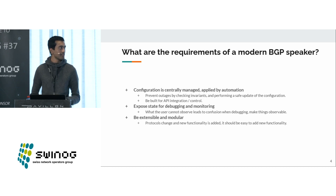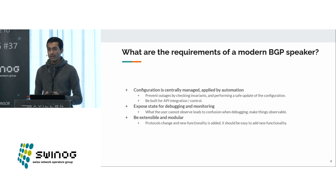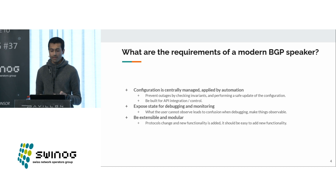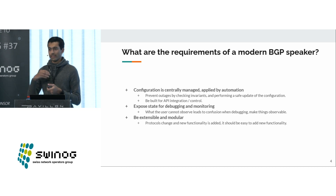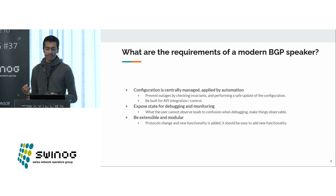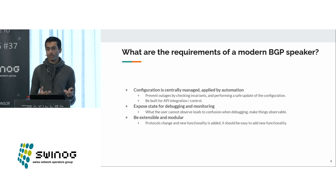So let's look at some of the requirements of what a modern BGP speaker could have. Configuration is centrally managed and applied by automation. The fewer humans you have in the loop, the more reliable the service becomes — no more typos, no more doing things in the wrong order. You write the code to do your deployment once, make sure it works, and then the automation repeatedly applies that. You can have safety checks and feedback loops to verify the configuration is behaving as expected.